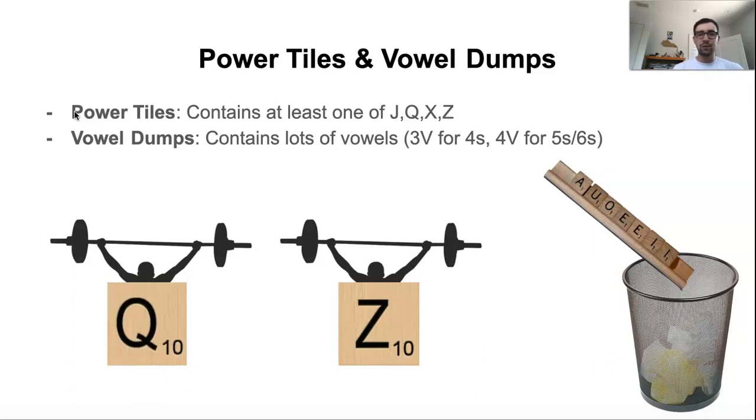The next set that's really important are vowel dumps. It can be really frustrating to have a rack like five or six vowels. And if you don't know words like aurei, A-U-R-E-I, and olea, O-L-E-A, it can often be really hard to get rid of these tiles without making a shorter play or having to exchange and score zero points. So I always find these words to be really useful to know. And there aren't too many of them, so they aren't too hard to learn.